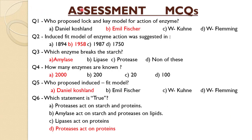MCQ No. 1: Who proposed the Lock and Key Model for the action of enzymes? Option A: Daniel Koshland. Option B: Emil Fischer. Option C: W. Kühne. Option D: W. Fleming. The answer is Option B, Emil Fischer.